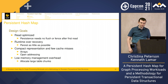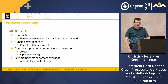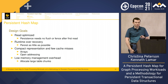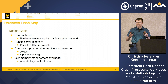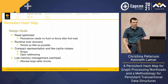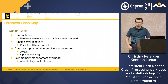We set design goals around the graph analytics problem. We wanted it to be read-optimized, where persistence doesn't need to flush or fence after the first read. We wanted to prioritize runtime over recovery — persist as little as possible and recover as much as possible. We also wanted a compact representation with few cache misses, accomplished using arrays and open addressing. And we wanted to minimize memory management overheads by allocating large table chunks.